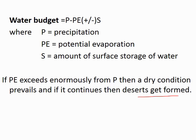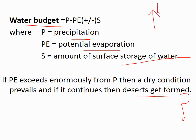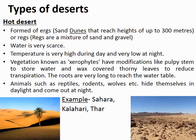How does a desert get formed? To understand this, we need to understand the water budget. The water budget is the rate of precipitation minus potential evaporation, plus or minus the amount of surface water storage. If the potential evaporation exceeds precipitation enormously, a dry condition is produced. If this condition persists consistently, a desert gets formed.